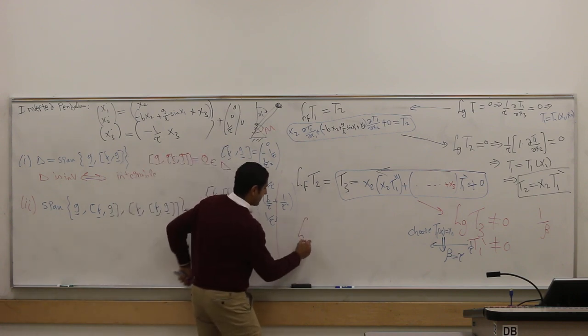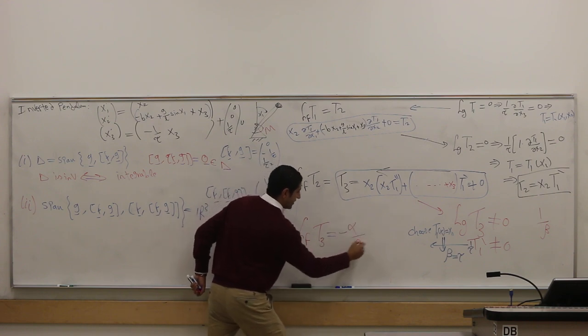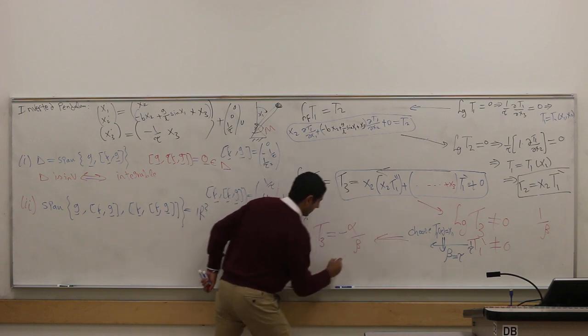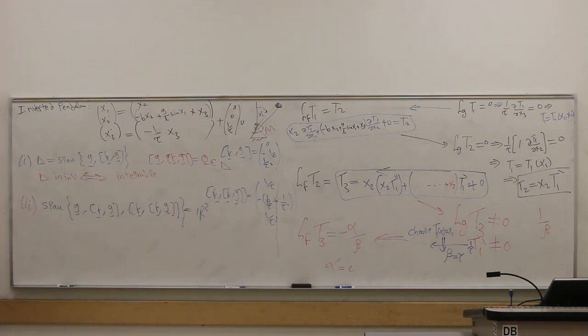And here, the final thing: lf of t3 is negative alpha, alpha, beta. So this can give you alpha. That's why I got all the transformations—I got alpha, beta.